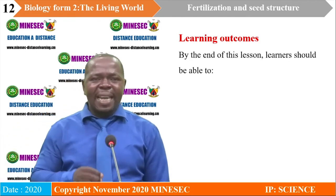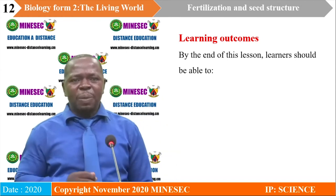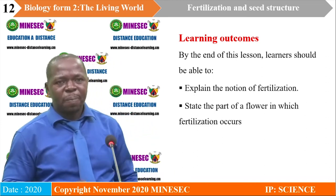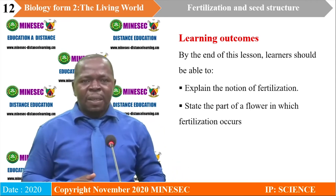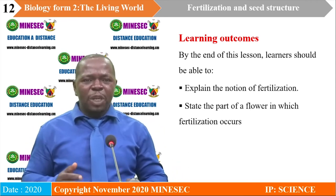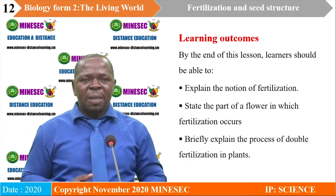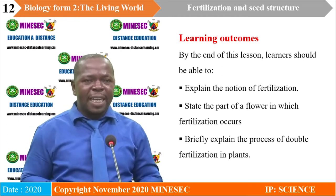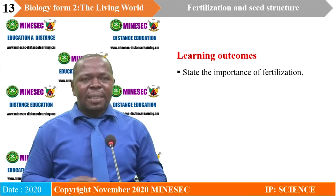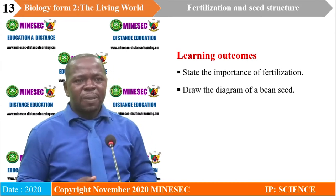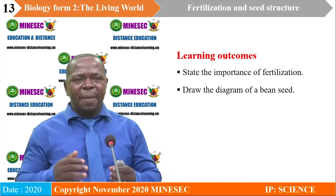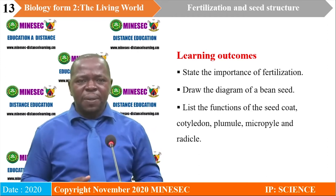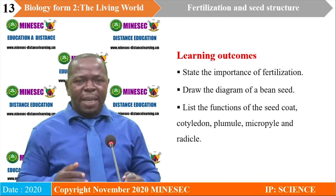By the end of this lesson, learners should be able to: explain the notion of fertilization; state the part of a flower in which fertilization occurs; explain the process of double fertilization in flowering plants; state the importance of fertilization; draw the diagram of a bean seed; list the functions of the seed coat, cotyledon, plumule, micropyle and radical.